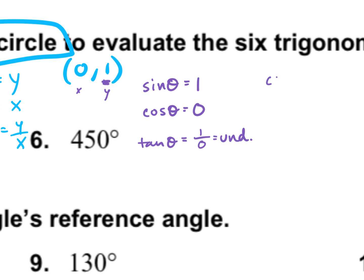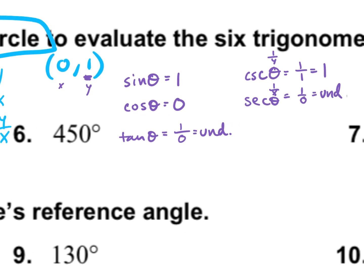For the reciprocal functions at 90°: cosecant is 1 over Y, so 1 over 1 equals 1. Secant is 1 over X, so 1 over 0 is undefined. Cotangent flips tangent, so that's 0 over 1, which equals 0.